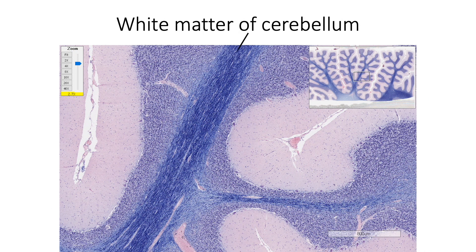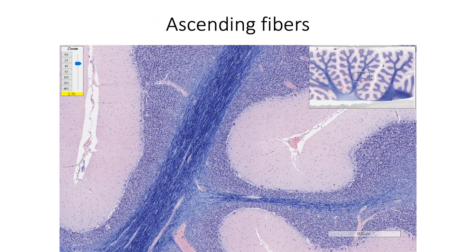This is a Luxol blue stained section of cerebellum showing the myelinated fibers in the white matter of cerebellum. Ascending fibers are broadly grouped into two types. First type is the climbing fibers.